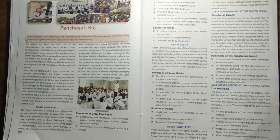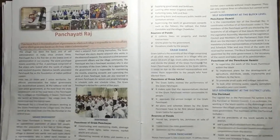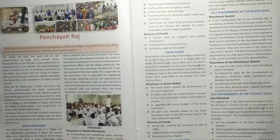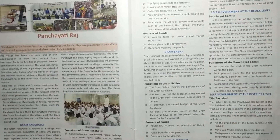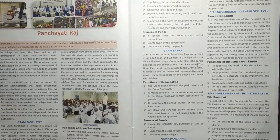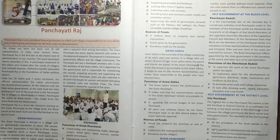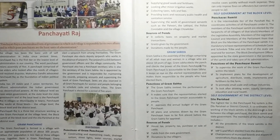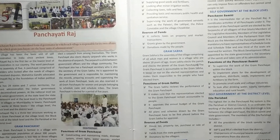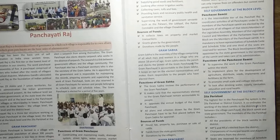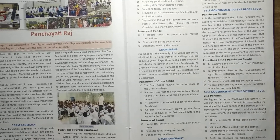Self-government at the block level: Panchayat Samiti. It is the intermediate tier of the Panchayat Raj. Functions of the Panchayat Samiti: to supervise the work of the Gram Panchayat within the block; to implement plans for the development of agriculture, distribute seeds, implements, and fertilizers to farms; to promote small-scale and cottage industries; and to look after drinking water supplies, sanitation, education, and rural health.